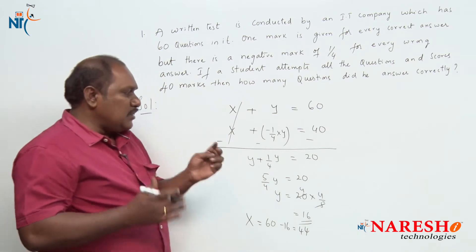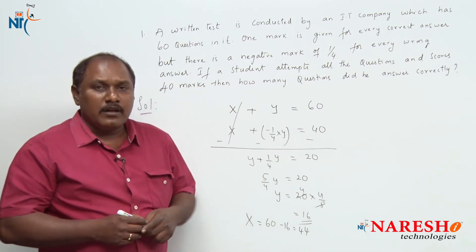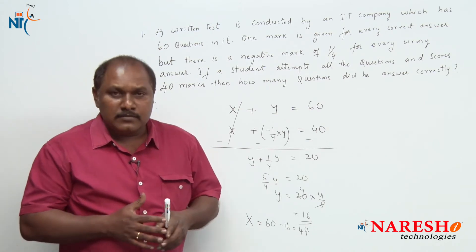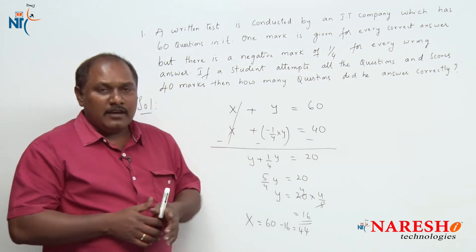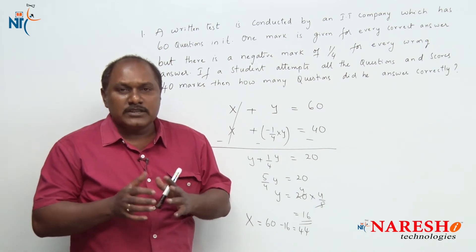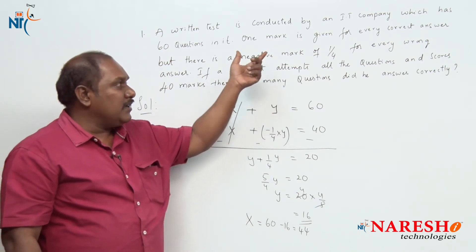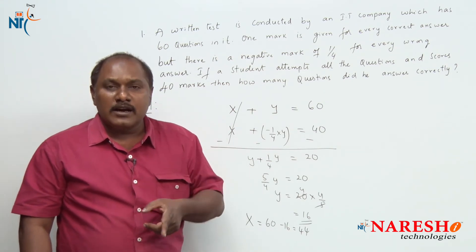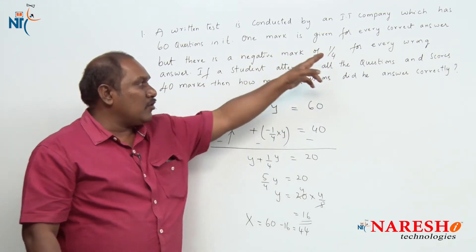This is one way of solving this problem. But instead of solving it in this lengthy way, we can answer it directly by thinking logically. For every correct answer he is given one mark, but for every wrong answer there is a negative mark of one-fourth.